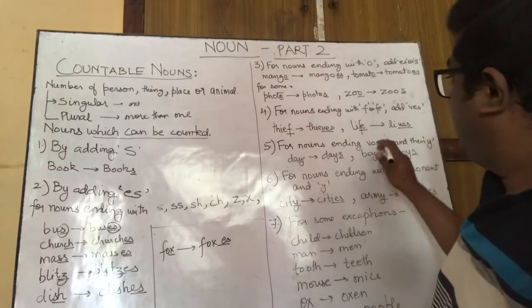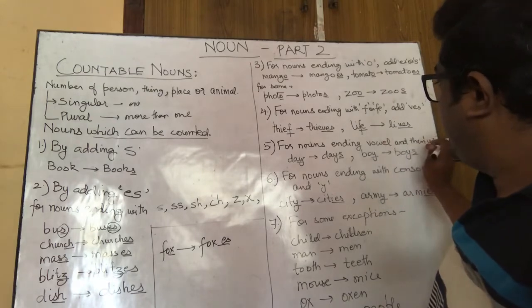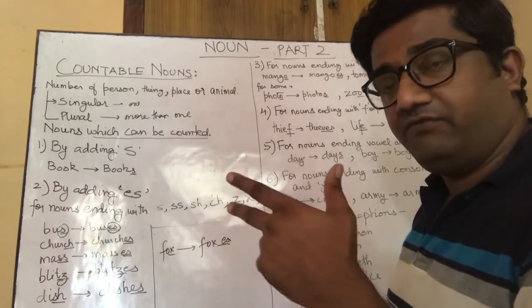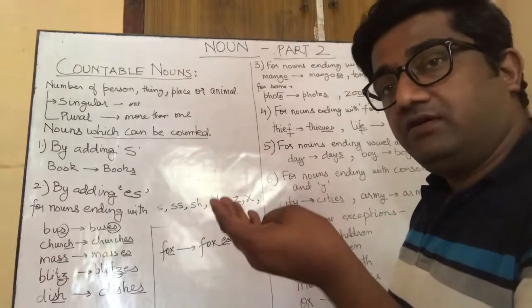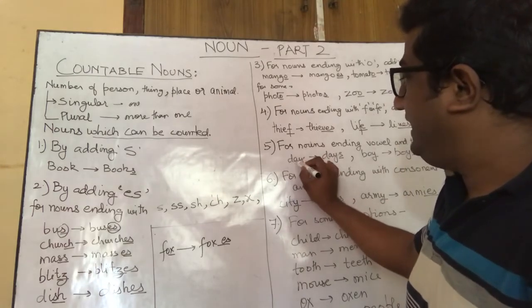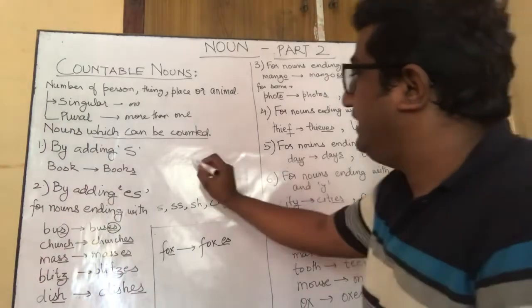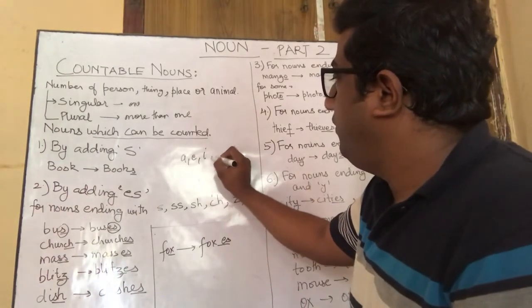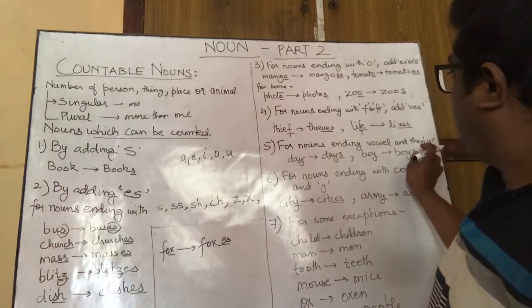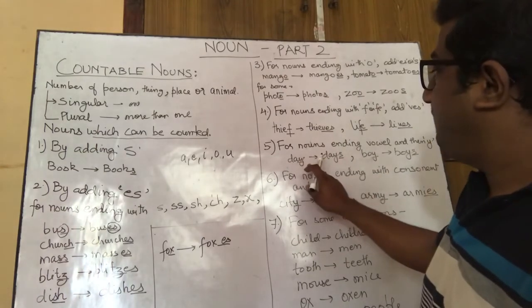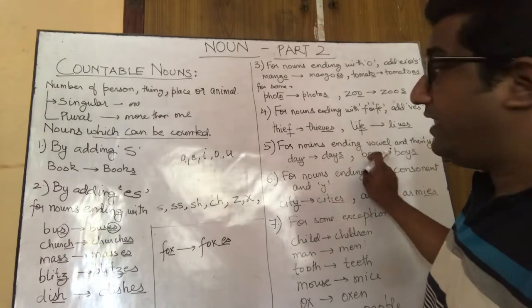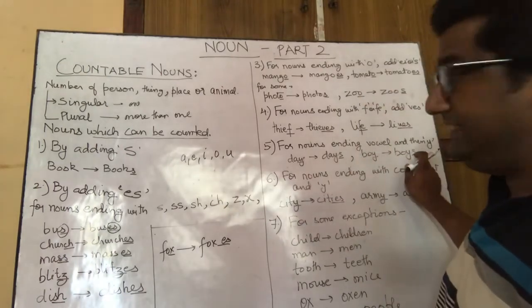There are nouns which end with Y preceded by a vowel — vowels being A, E, I, O, U. For example, day (D-A-Y): A is a vowel, so we simply add S, and day becomes days (D-A-Y-S). Boy (B-O-Y): again, O before Y is a vowel, so we add S and boy becomes boys.